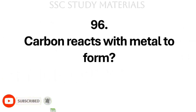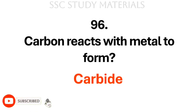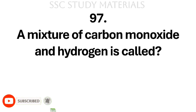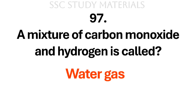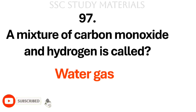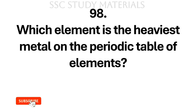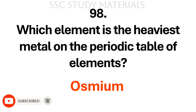Question No. 96: Carbon reacts with metal to form? Answer: Carbide. Question No. 97: A mixture of carbon monoxide and hydrogen is called? Answer: Water gas. Question No. 98: Which element is the heaviest metal on the periodic table? Answer: Osmium.